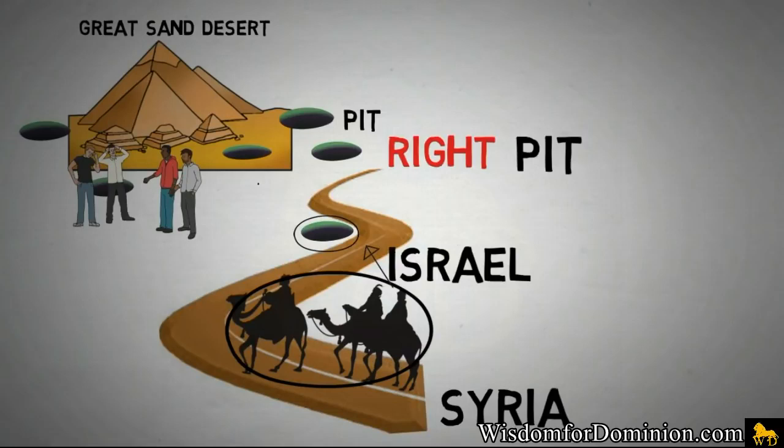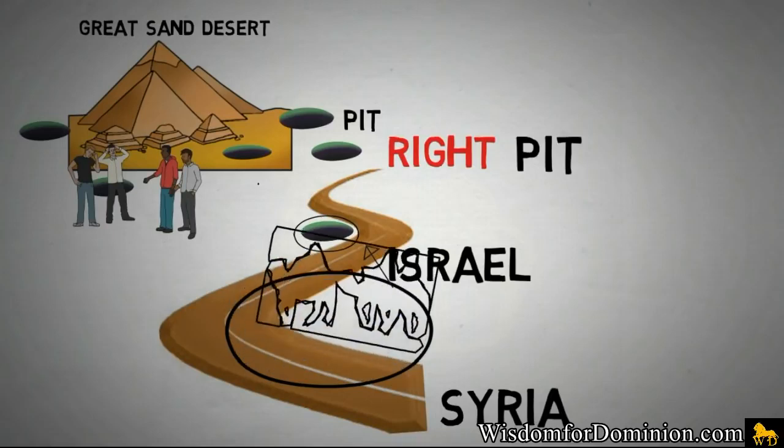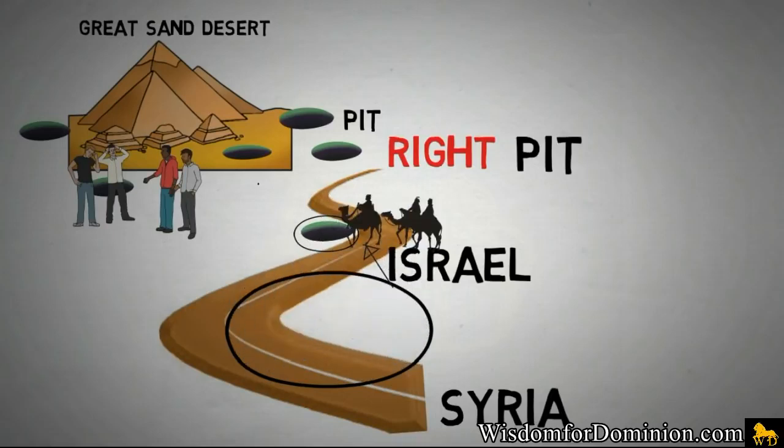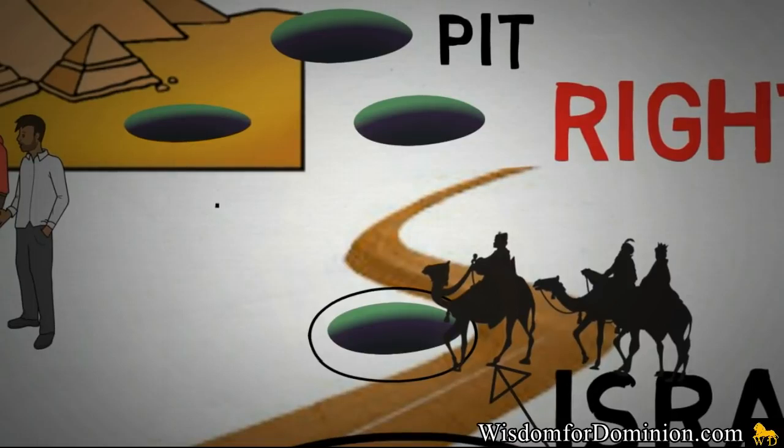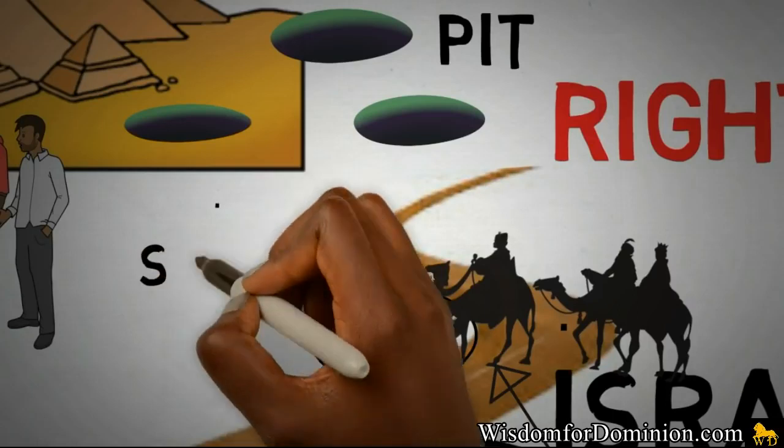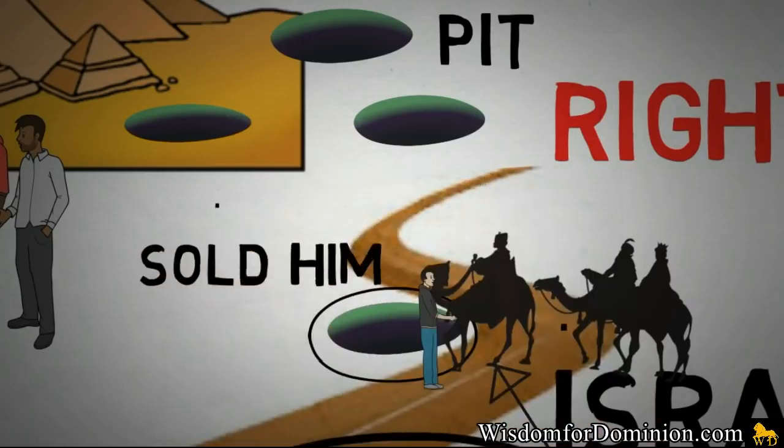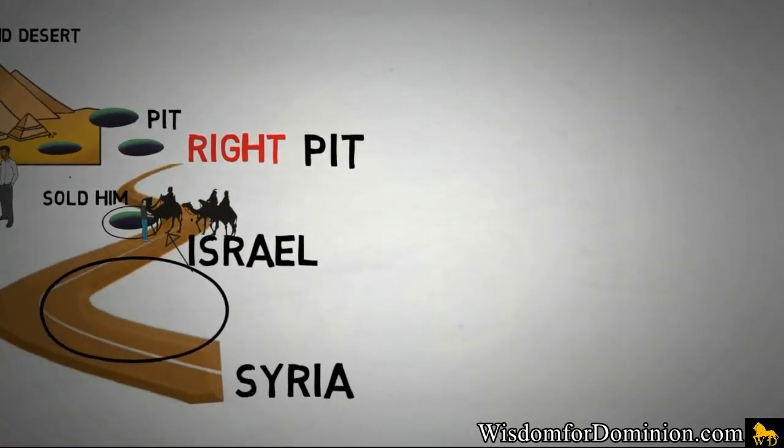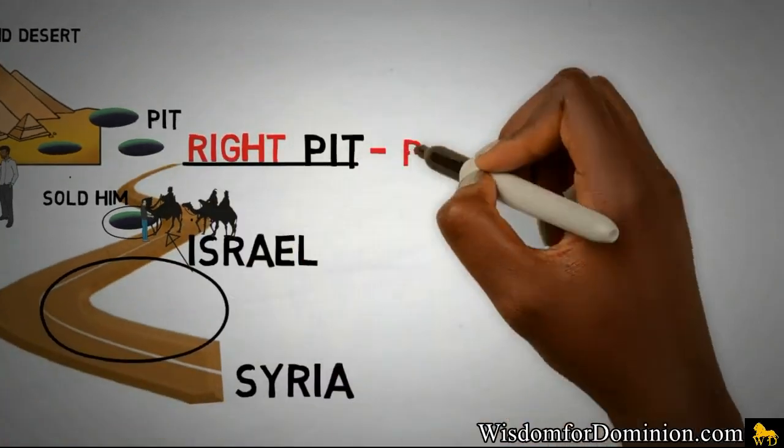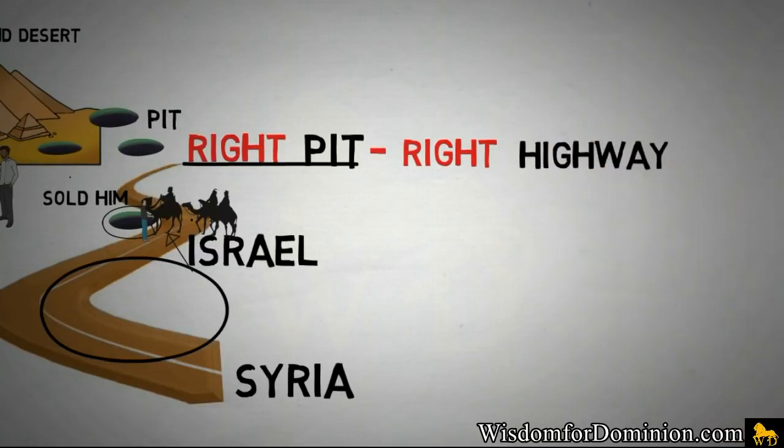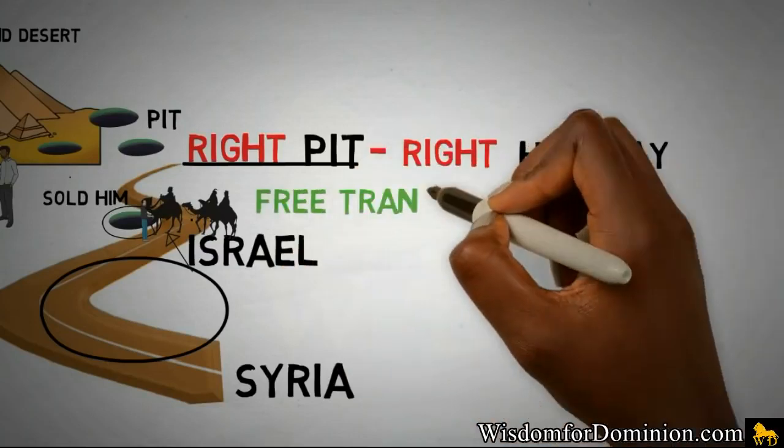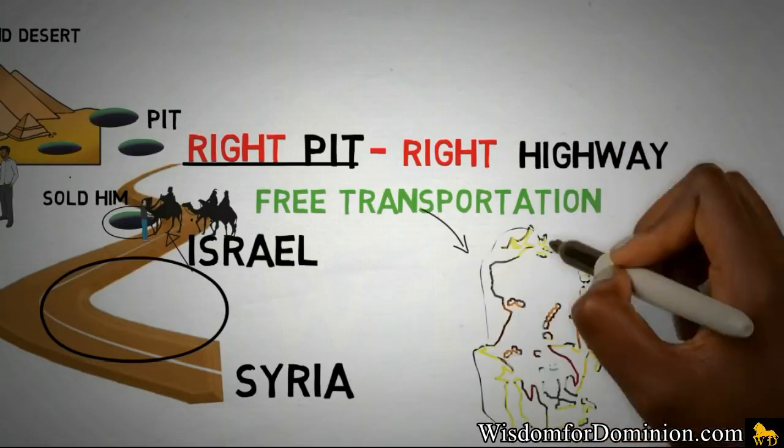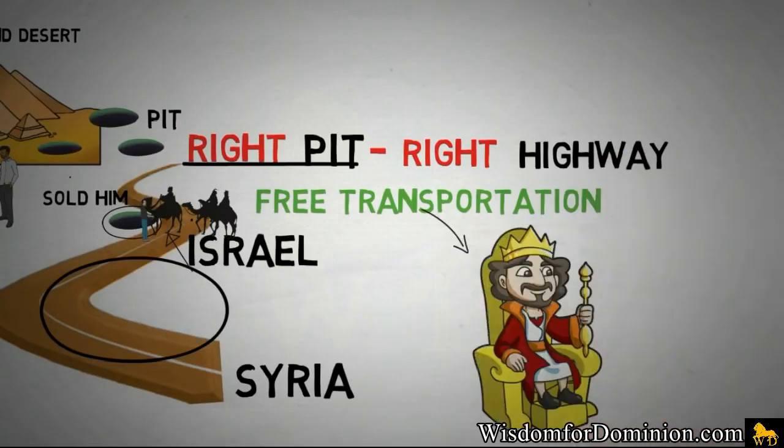Oh Jesus, have mercy. He said, 'It was the right pit because it was the pit that the caravans had to pass.' And when the men, the brothers, saw the caravan, they took him out of the pit and sold him on the side of the road to the caravan. And I thought, 'That's amazing. He was in the right pit, next to the right highway, because the free transportation that he needed to take him to the throne was coming that same highway.'